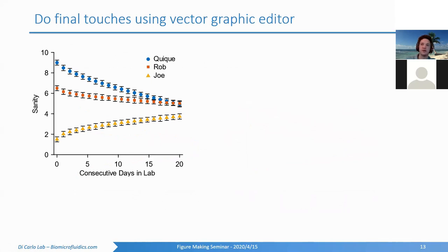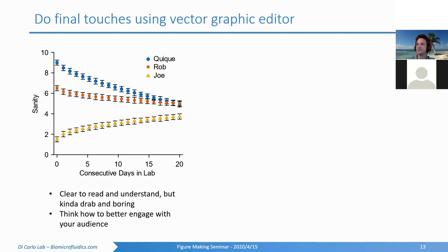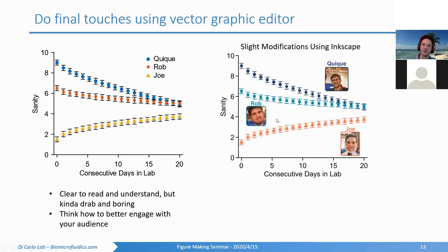For my workflow, I'll take a mostly finished image and do final touches when compiling. It depends on the journal, but for a lot of journals we submit to, it's usually not just one plot — it's a few plots compiled together with one overall message. If you want to touch it up more, you can think of ways to better engage the information being conveyed. For example, here I'm trying to convey information about three people in our lab — maybe you could put images of the people inside the plot, color-coded to match the data. This can all be done in Inkscape.